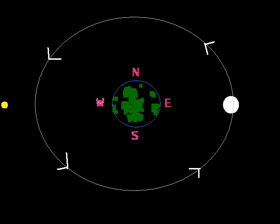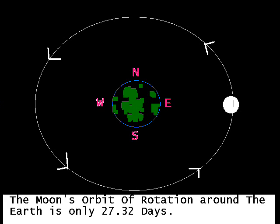This video talks about our moon and some facts about it. The moon's orbit of rotation around the Earth is only 27.32 days, not 30 or 29 like a lot of people think.